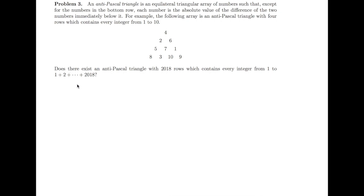When I first looked at this problem, I tried to build an anti-Pascal triangle for small numbers like 3, 4, and 5, and I succeeded. Later I tried to generalize the idea into larger numbers and I ran into trouble.